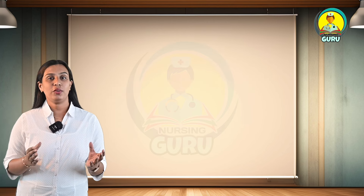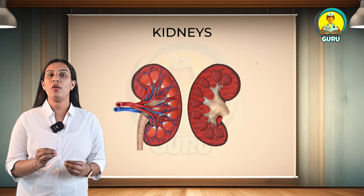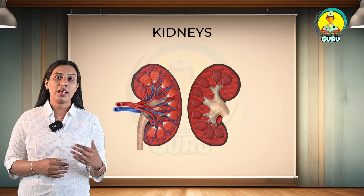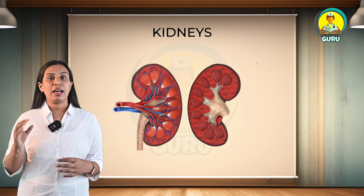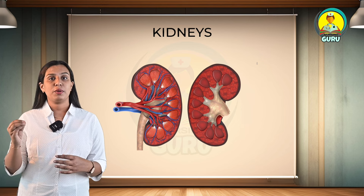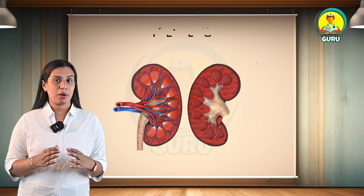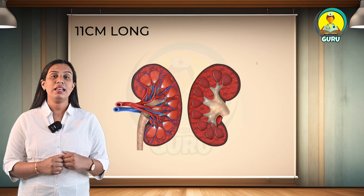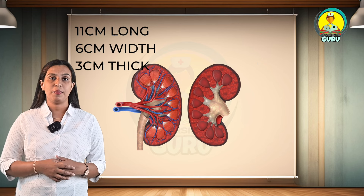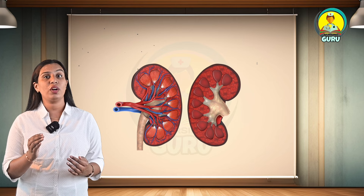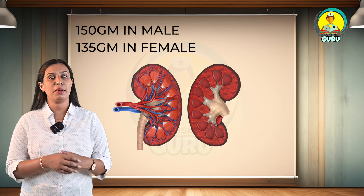Now I'm going to talk in detail about the kidneys. The kidneys are solid, bean-shaped organs located below the ribs of the posterior abdominal wall. The right kidney is positioned slightly lower than the left. Each kidney is about 11 cm long, 6 cm wide, and 3 cm thick. The average weight is 150 grams in males and 135 grams in females.